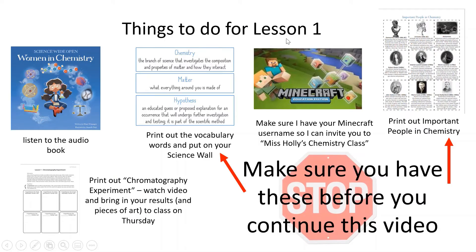Things to do for lesson one: there is a book online that I've linked, and there's a video available called 'Women in Chemistry,' so listen to the audio book. There are three vocabulary words for this lesson — chemistry, matter, and hypothesis. Print out the vocabulary words and put them on your science wall, somewhere in your house where you can look and see all the different words you're going to be using for our chemistry lessons.